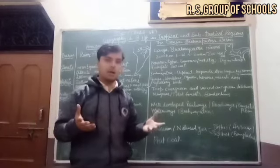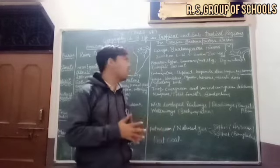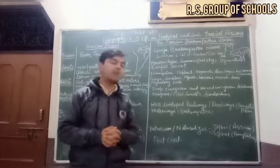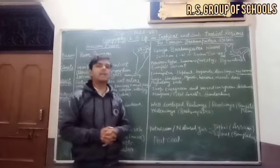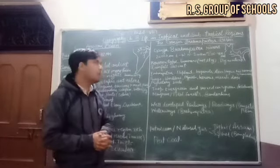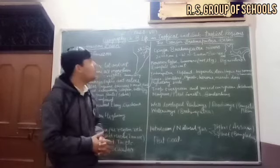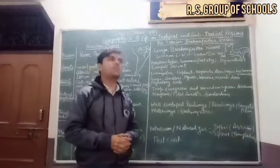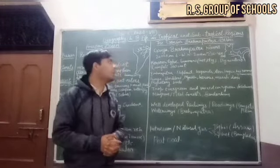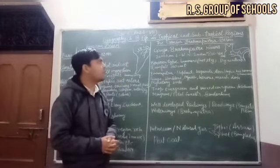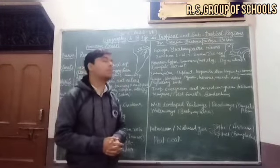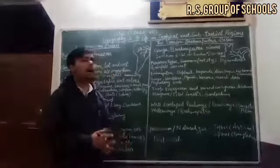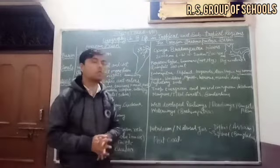The river forms a triangular delta, which is called the world's largest delta. The Ganga-Brahmaputra region covers the North-Eastern part of India. The basin extends more than 2,000 km from west to east, and its north-south extension is 100 to 400 km.